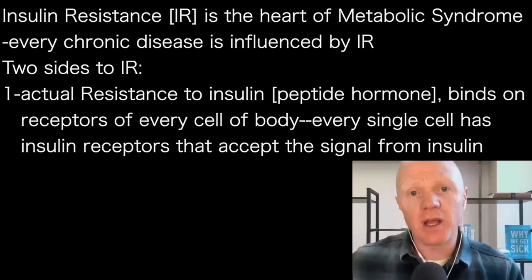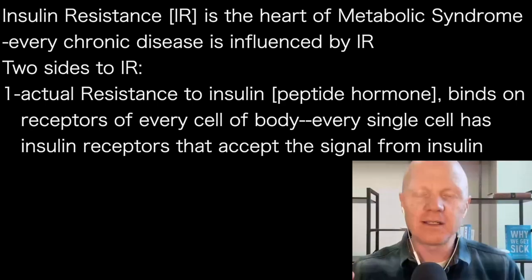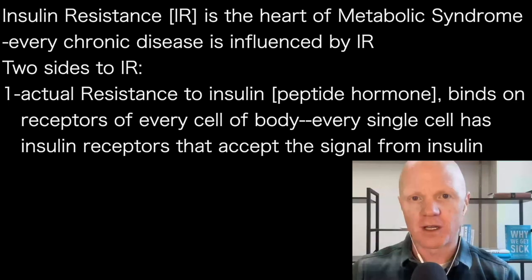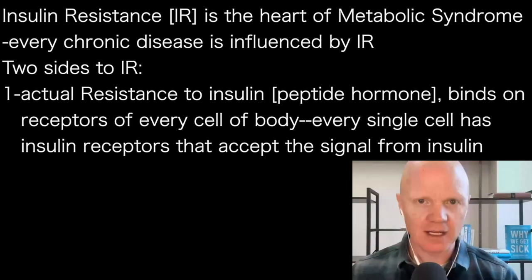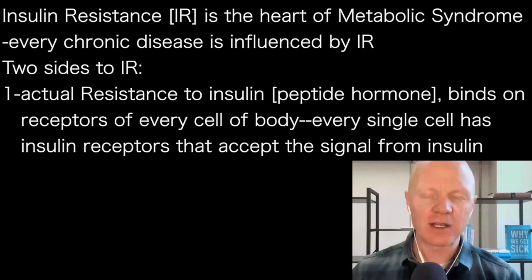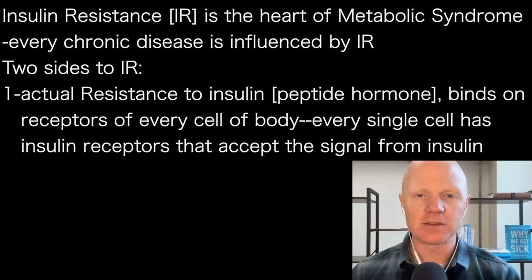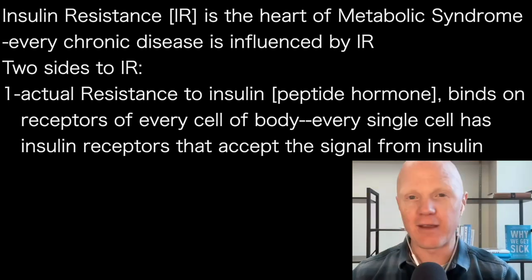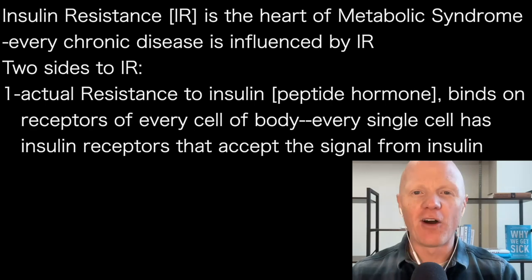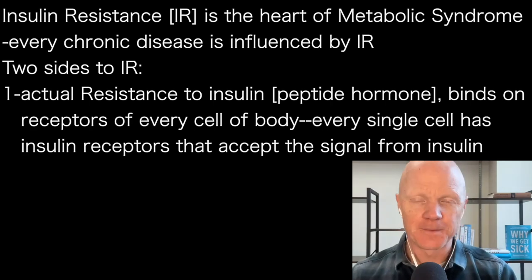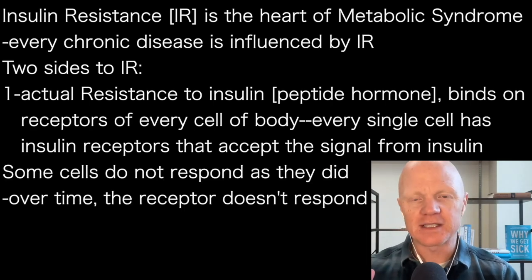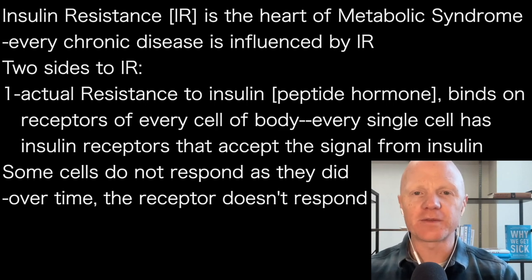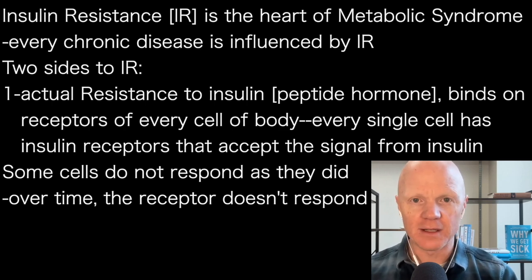As insulin circulates in the blood, it will come and bind on receptors of every single cell of the body. That's one of the reasons insulin is so unique as a peptide hormone — every single cell of the body, from brain cells to bone cells, from lung cells to liver cells, and every cell in between, they all have insulin receptors. The receptor is essentially a doorway that is built for insulin to come and knock on, and insulin will knock on every door of every cell.